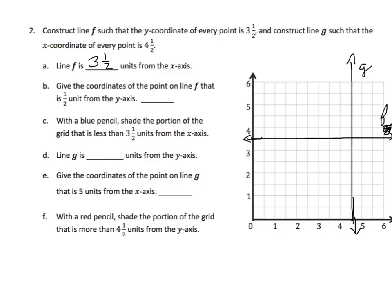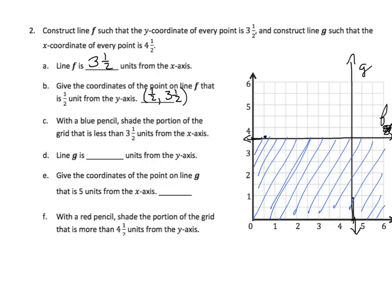Give the coordinates of the point on line F that is 1 half a unit from the y-axis. We go on line F and want to go 1 half unit from the y-axis — so there's our half right there. What are the coordinates? My x is 1 half, and my y is 3 and 1 half. With a blue pencil, shade the portion of the grid that is less than 3 and 1 half units from the x-axis. We shade all the values below line F that are less than 3 and 1 half units.